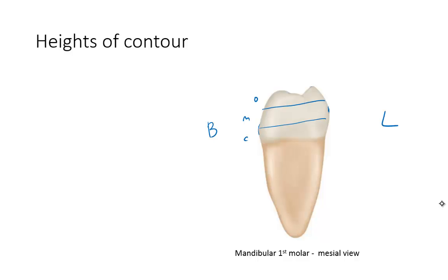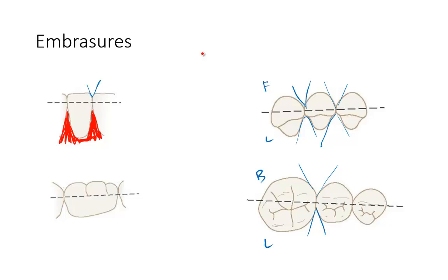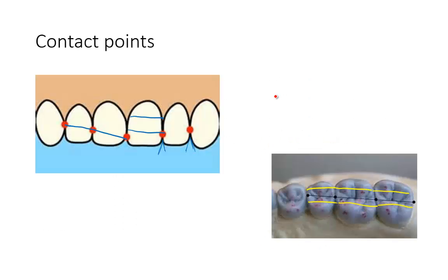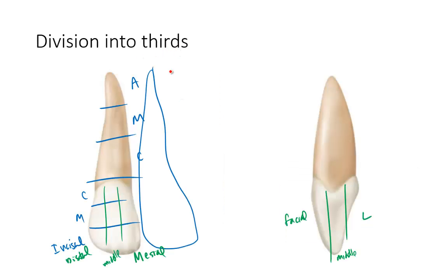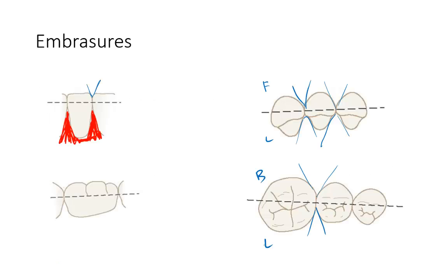That's the end of our lecture. As a recap, don't get too bogged down in the details and rules. Big picture: understand what a height of contour is and how to describe it; know what an embrasure is and that you have incisal, facial/buccal, and lingual embrasures; and understand that contact points have both an incisal-gingival axis and a buccal-lingual or facial-lingual axis. You can describe where mesial and distal contact points are using the division of teeth into thirds. Next time, when we learn about individual teeth, you'll see how these concepts apply to each specific tooth.